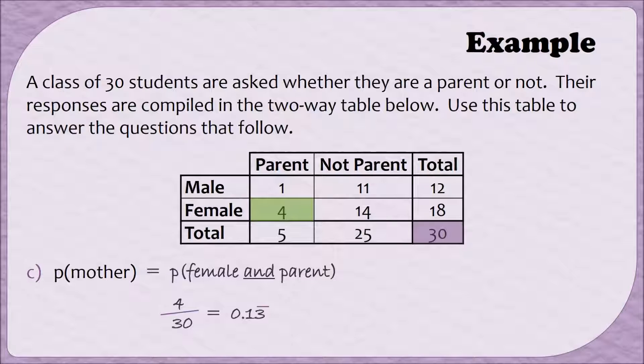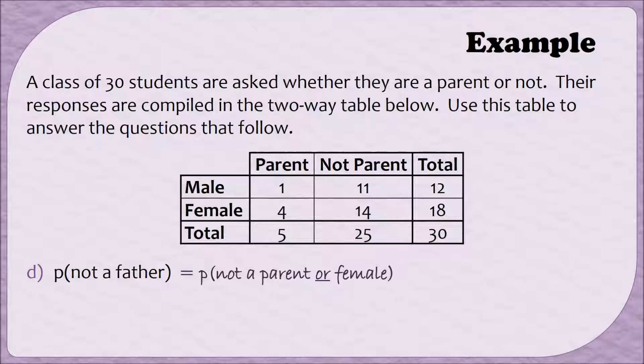Let's do another example similar to this one. Let's find the probability that somebody is not a father. In this case, there are a couple of different ways that a person could not be a father. One way, they could not be a parent, or they could be a mother, right? They could be female instead of male. So we can rephrase this probability, not a father, as the probability of not a parent or female.